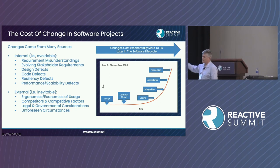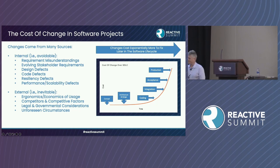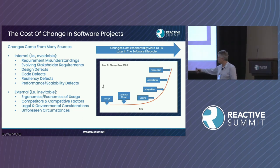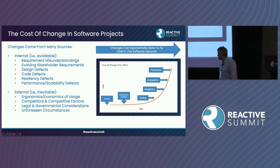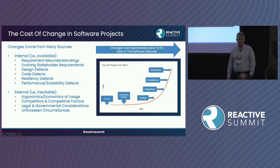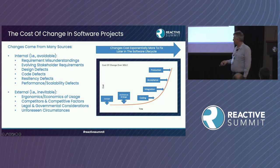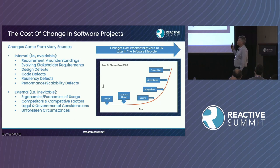I realized there are two kinds of changes: internal and external. We can't really do anything about external changes — laws change, ergonomics, competitors — they're going to do what they do and we have to adapt in our software. Those changes are unforeseen. But the internal ones we can do something about.